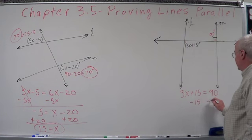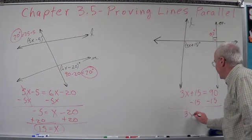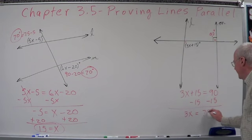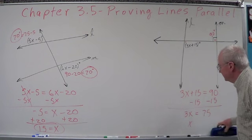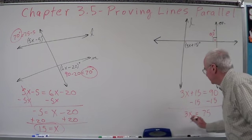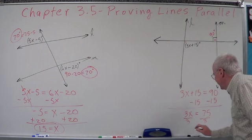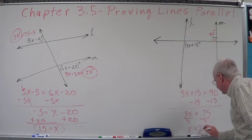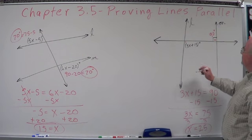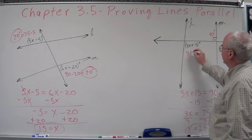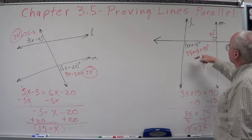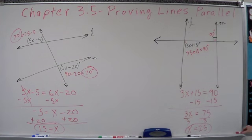Let's subtract 15 from both sides. 3X equals 75. We're going to divide by 3 on both sides. That gives X equals 25. Let's plug that in: 3 times 25 is 75, plus 15 equals 90 degrees. So if X equals 25, then these two lines would be parallel.